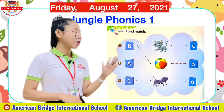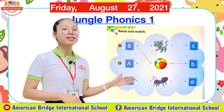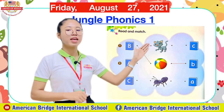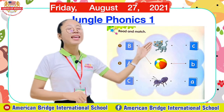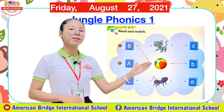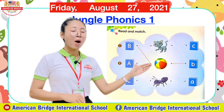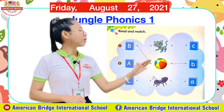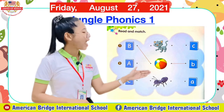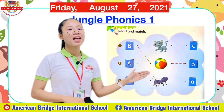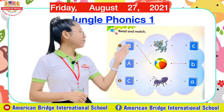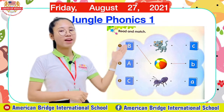Let's tell teacher what is the first picture here — cat, right, this is cat. What about the second one — ball, okay, ball. What about the last picture, everyone — ant, okay, so this is ant. Now look here, we have already done one as the sample.